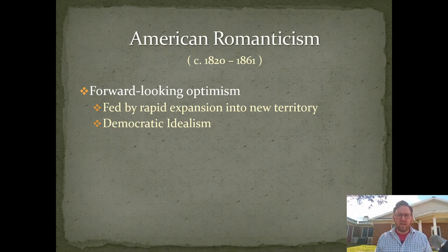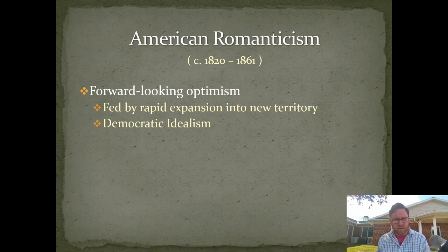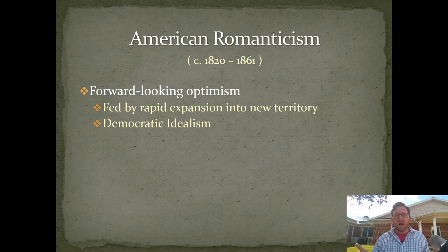Manifest destiny was the idea that became popular in the middle of the 1800s. 'Manifest' means it's plain to everybody, and 'destiny' means it's fated. It's plain to everybody that it is fated that the American nation will extend from the Atlantic Ocean to the Pacific Ocean. This was a popular idea among white Americans of the day — of course, this is going to be our land.